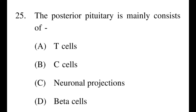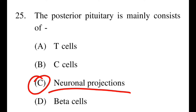Next question: The posterior pituitary is mainly composed of? Options: A: T cells, B: C cells, C: neural projections, D: beta cells. The right option is C, neural projections.